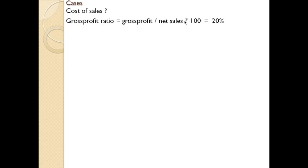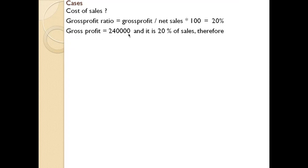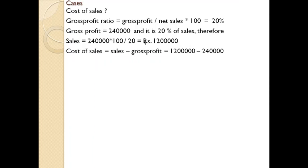Gross profit ratio is gross profit divided by net sales into 100, which is given as 20%. Gross profit is 2,40,000, which means 2,40,000 is 20% of sales. So sales equal 12,00,000. Therefore, cost of sales equals sales minus gross profit: 12,00,000 minus 2,40,000 equals 9,60,000. Now you have cost of sales.